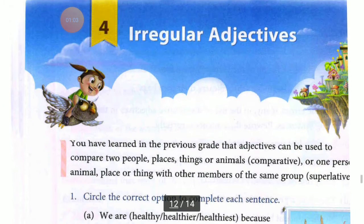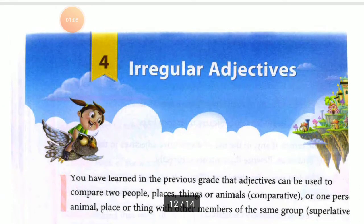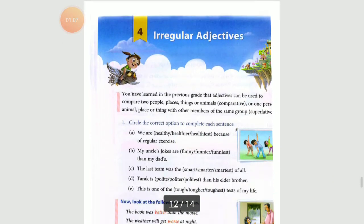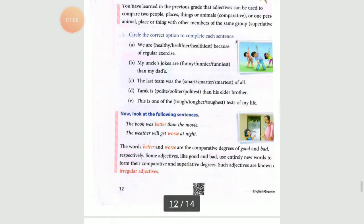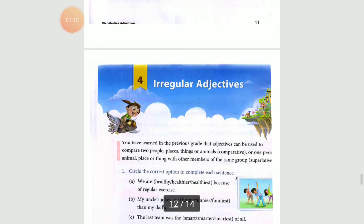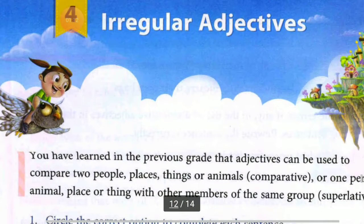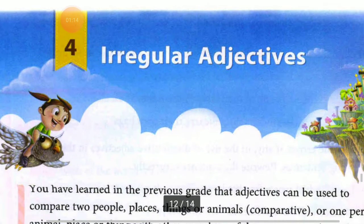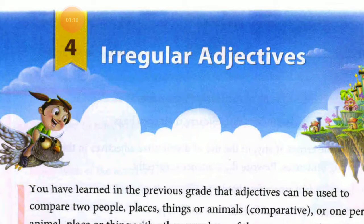Take out your books of English Grammar and turn to page number 12. On that page we have Chapter number 4. Page number 12 pe chapter number 4 hai, jiska naam hai Irregular Adjectives. Hamara topic kya hai? Irregular Adjectives. Now let us know what these are.